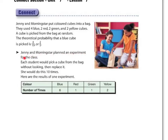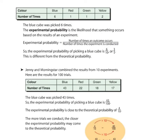Jenny and Morningstar planned an experiment for the class. Each student would pick a cube from the bag without looking, then replace it — that's key, so there's still the same number of cubes in the bag — and do this ten times. Here are the results of one experiment: blue was picked six times, red once, green once, and yellow twice. The experimental probability is the likelihood that something occurs based on the results of the experiment.